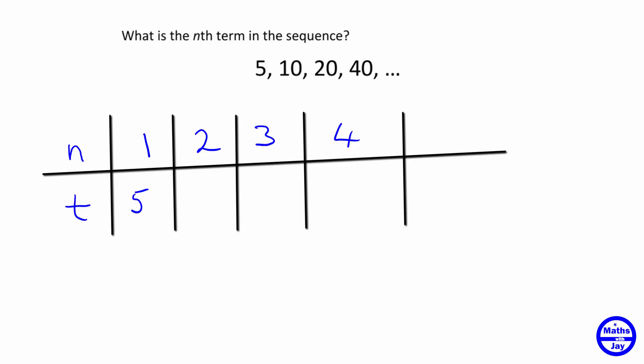Now the second term is 10, but we can write that in terms of the 5 and also what we're multiplying by, because we can see here that we're multiplying each number by the same thing each time.